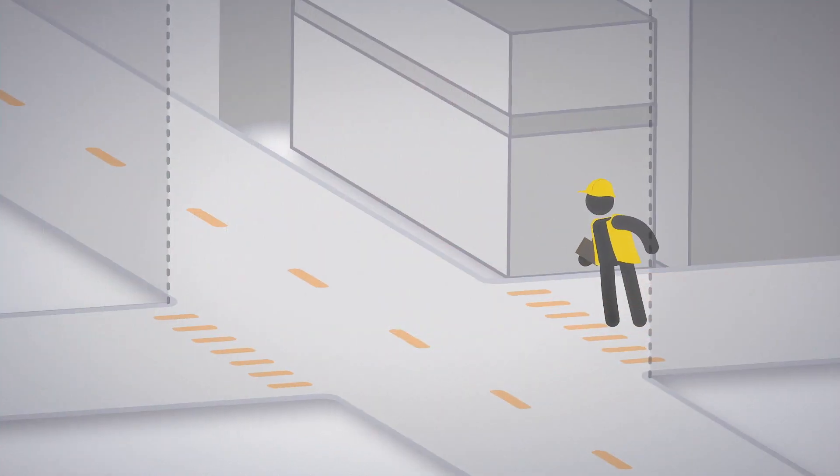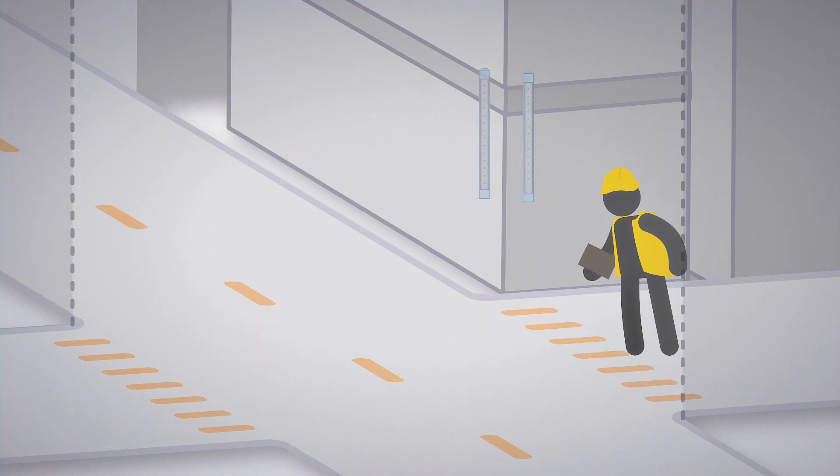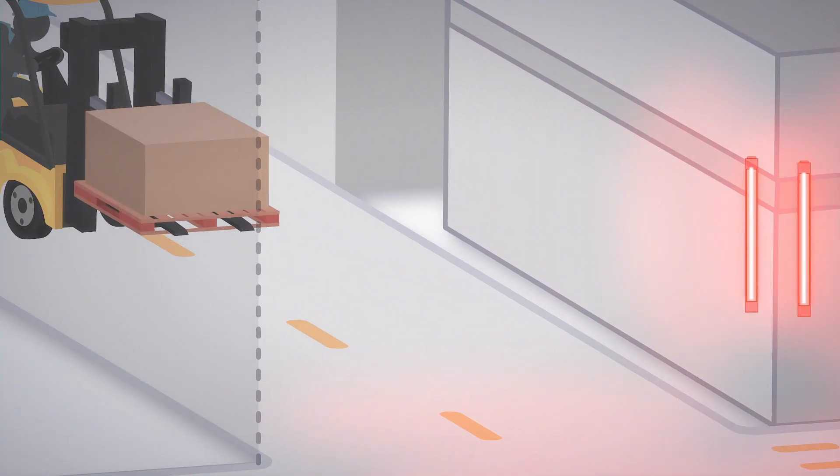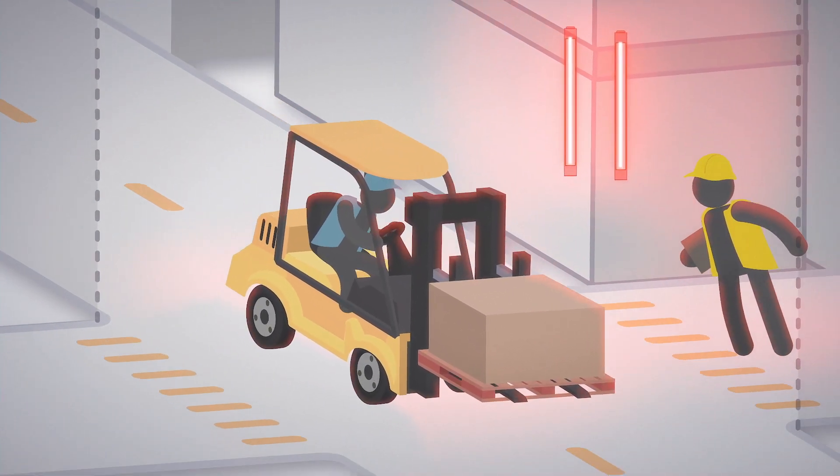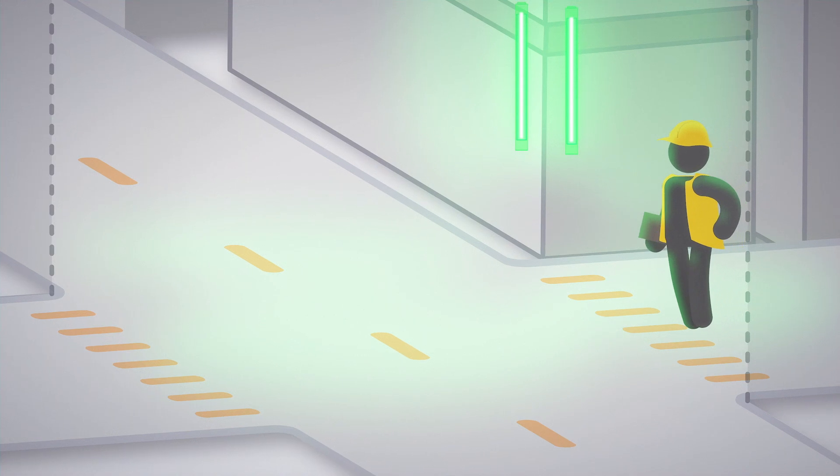Intersections with poor visibility can be a workplace hazard, but EasyStatus lights help avoid collisions by indicating when the intersection is in use. The light turns red when a forklift is approaching, warning others to stay out of the way. The light turns green when the intersection is clear and it is safe to proceed.